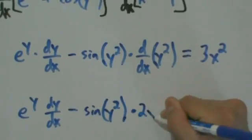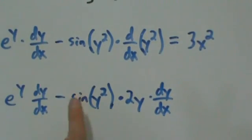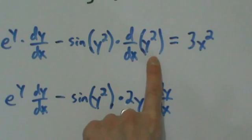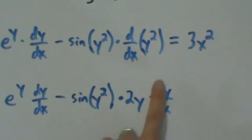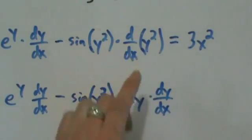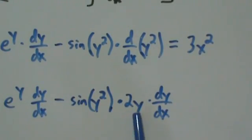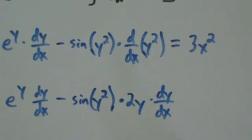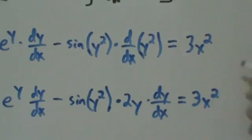The derivative of y squared with respect to x is 2y times dy/dx, by the chain rule. The big guy function is squaring, so its derivative is 2y evaluated at the little guy y, times the derivative of the little guy dy/dx. So implicit differentiation really is just the chain rule. This gives us e to the y dy/dx minus 2y sine of y squared times dy/dx equals 3x squared.